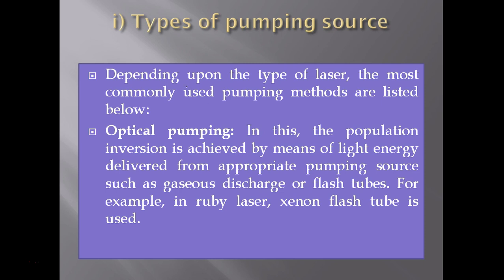Types of pumping source. Optical pumping: In this the population inversion is achieved by means of light energy delivered from appropriate pumping source such as gas discharge flash tubes. For example, in ruby laser xenon flash tube is used. I will discuss the working and construction of ruby laser in detail when I upload that video lecture.